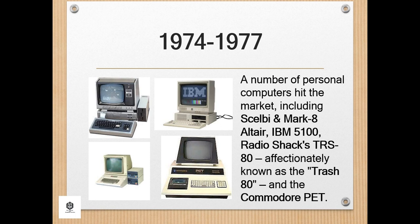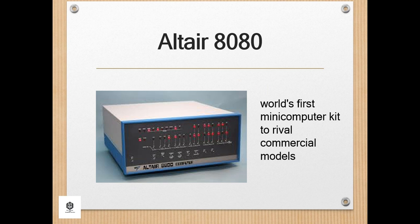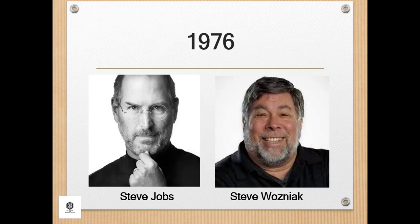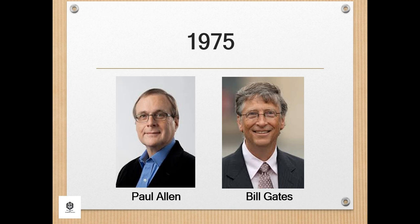During 1974 to 1977, a number of personal computers hit the market, including the Altair, IBM 5100, RadioShack's TRS-80 — affectionately known as the Trash 80 — and the Commodore PET. In 1975, the January issue of Popular Electronics magazine featured the Altair 8080, described as the world's first minicomputer kit to rival commercial models. Two computer geeks, Paul Allen and Bill Gates, offered to write software for the Altair using the new BASIC language, and on April 4th, after the success of this first endeavor, the two childhood friends formed their own software company: Microsoft.